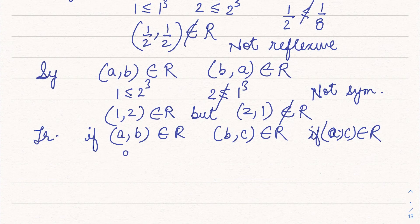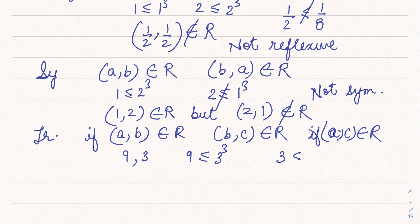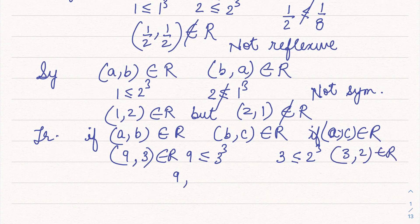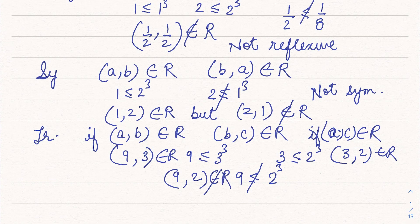Let's take a = 9, b = 3, c = 2. Now 9 ≤ 3³ = 27, so (9, 3) belongs to R. And 3 ≤ 2³ = 8, so (3, 2) belongs to R. But if I check (9, 2): is 9 ≤ 2³ = 8? That is not true. So (9, 2) does not belong to this relation, therefore this relation is not transitive.